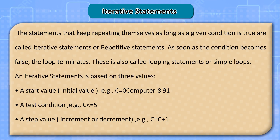Iterative statements: the statements that keep repeating themselves as long as a given condition is true are called iterative statements or repetitive statements. As soon as the condition becomes false, the loop terminates. These are also called looping statements or simple loops. An iterative statement is based on three values: a start value (initial value), for example c equals 0; a test condition, for example c equals 5; and a step value (increment or decrement), for example c equals c plus 1.